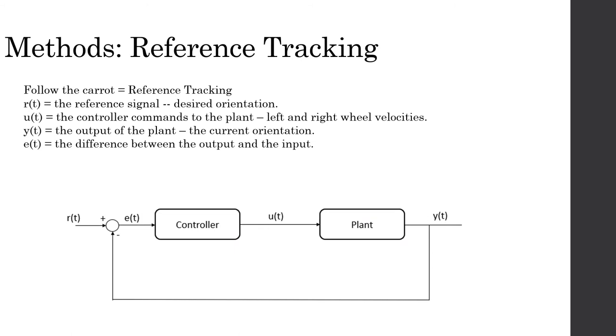In control system theory, follow the carrot is an application of reference tracking. The robot is trying to track the desired angle to know which way to go. Here, r is the reference signal or the desired orientation. U is the control commands to the plant, left and right wheel velocities. Y is the output of the plant, the current orientation. And E is the difference between the output and the input.